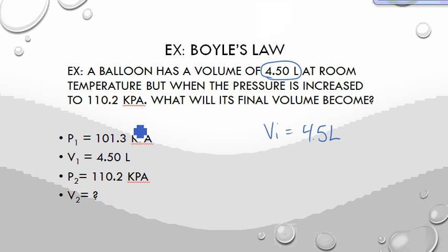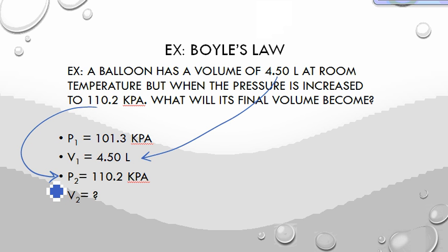You know the initial pressure. Standard pressure is 101.3 kilopascals. Your initial volume was given to you in the equation. You have the new pressure - the pressure is increased to 110.2. That was given as well. And then you can find your final volume.